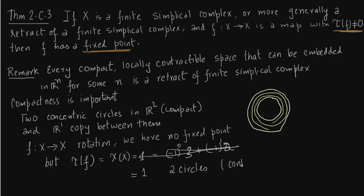These two circles contribute zero to the Euler characteristic. A single circle consists of a point contributing one, and then minus one comes from the one-cell of the circle. So for each circle: one minus one equals zero. Taking two circles individually gives zero plus zero. But a single line is equivalent to a point, so it contributes one.